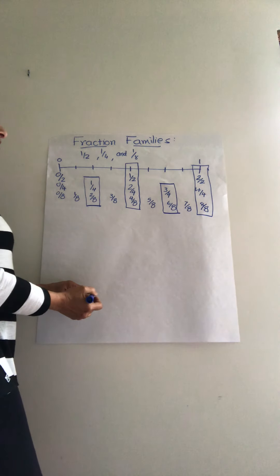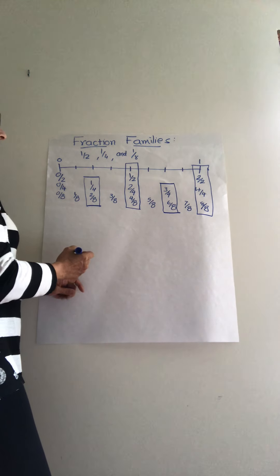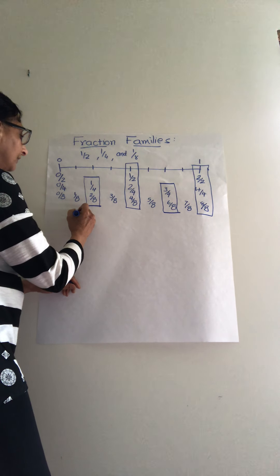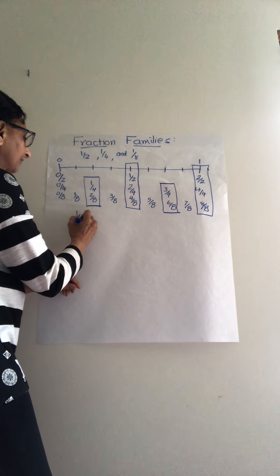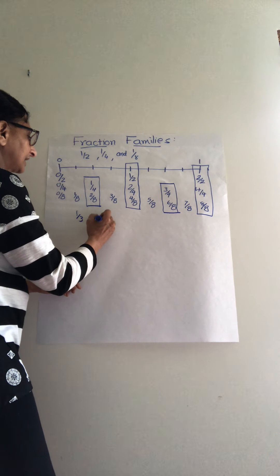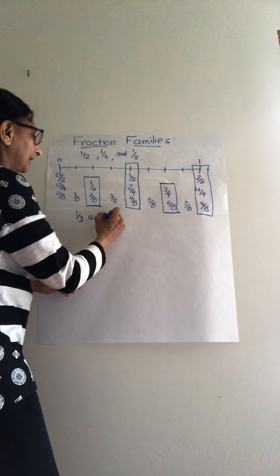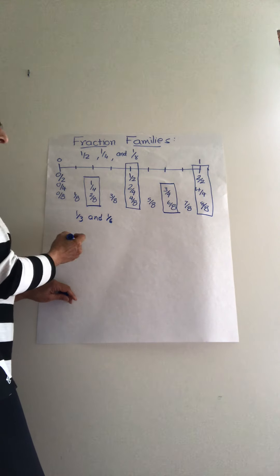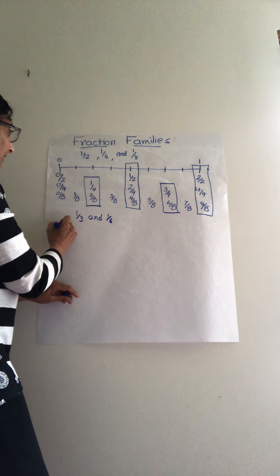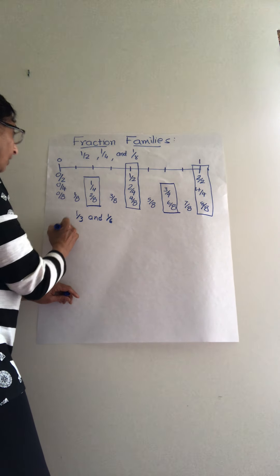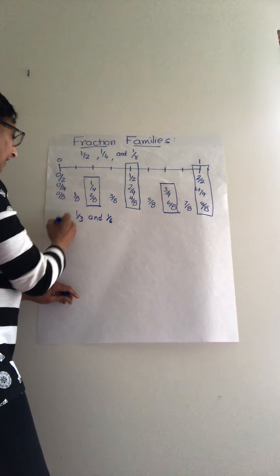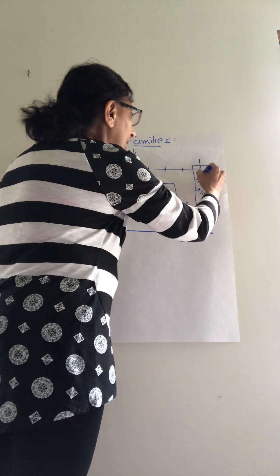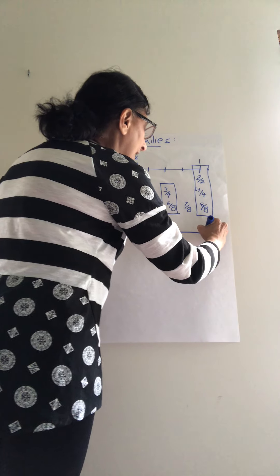Now we are going to build the thirds and sixths number line. I will build the same size number line, placing zero underneath zero and one underneath one.